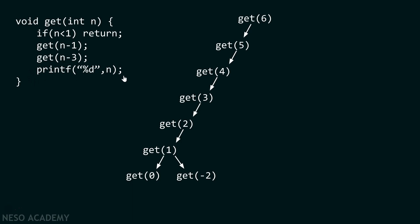After that we just have to print the value of n, but since the question asks only how many times get is called, we don't need to worry about what gets printed. As we return back to get(1), there is no further statement, so we return back to get(2). From get(2) we again find a get function call. This time n equals two and two minus three is minus one, so control transfers from get(2) to get(-1). As minus one is less than one, the condition is satisfied and we return back to get(2), then return back to get(3).